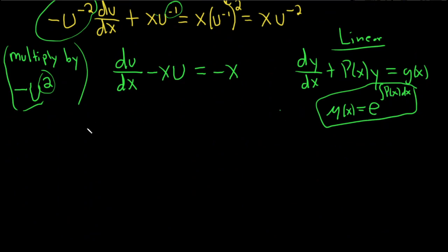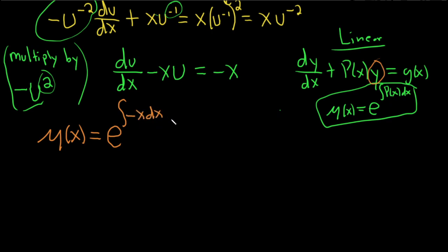Now we can compute mu(x). Here our equation has u as the unknown function rather than y, and the coefficient of u is negative x. So mu(x) equals e to the integral of negative x dx, which equals e to the negative x squared over 2, using the power rule — add 1 and divide. Don't worry about the constant of integration; it's not necessary here. Once you watch this and do one on your own, you'll have it.